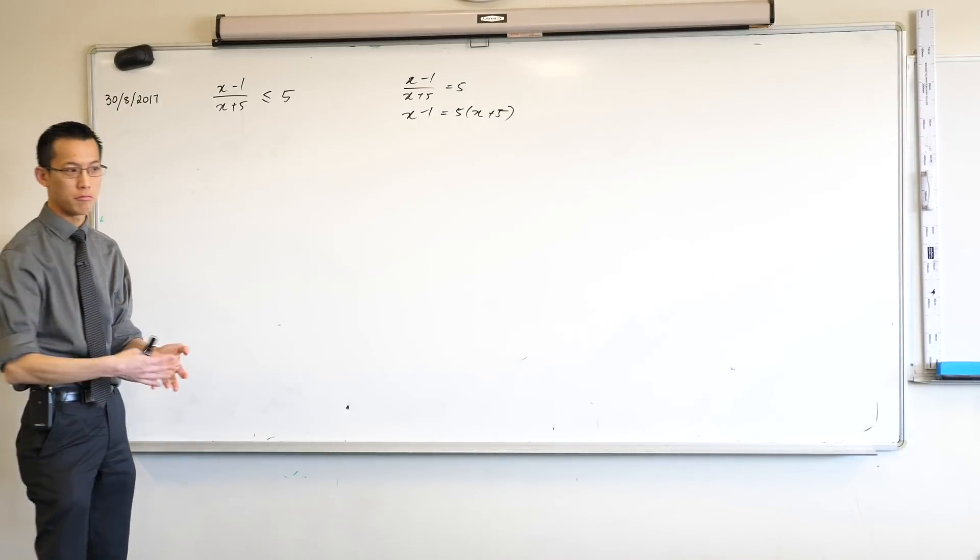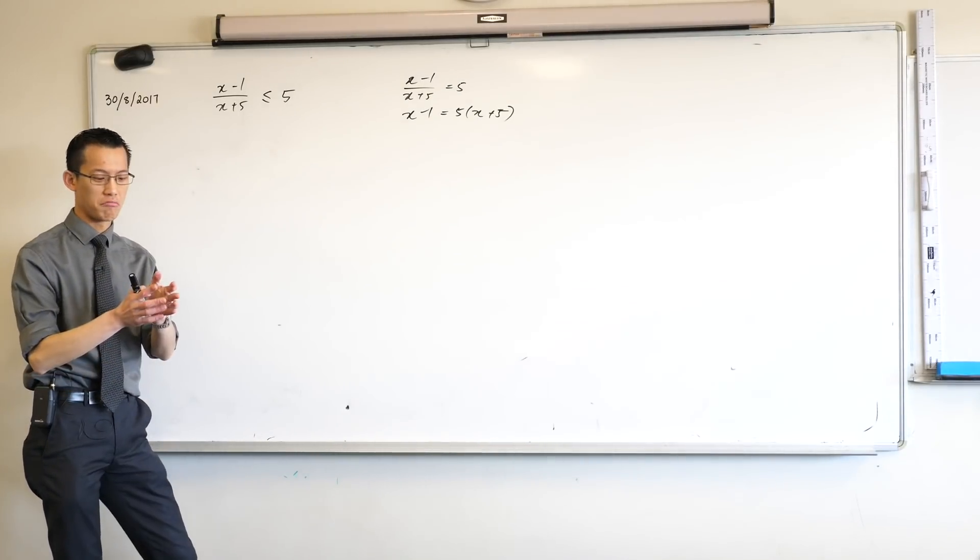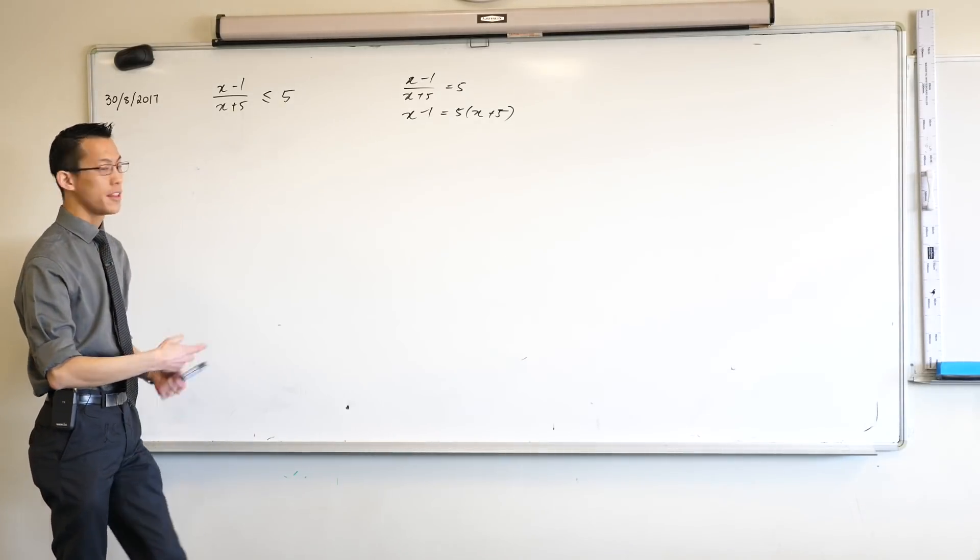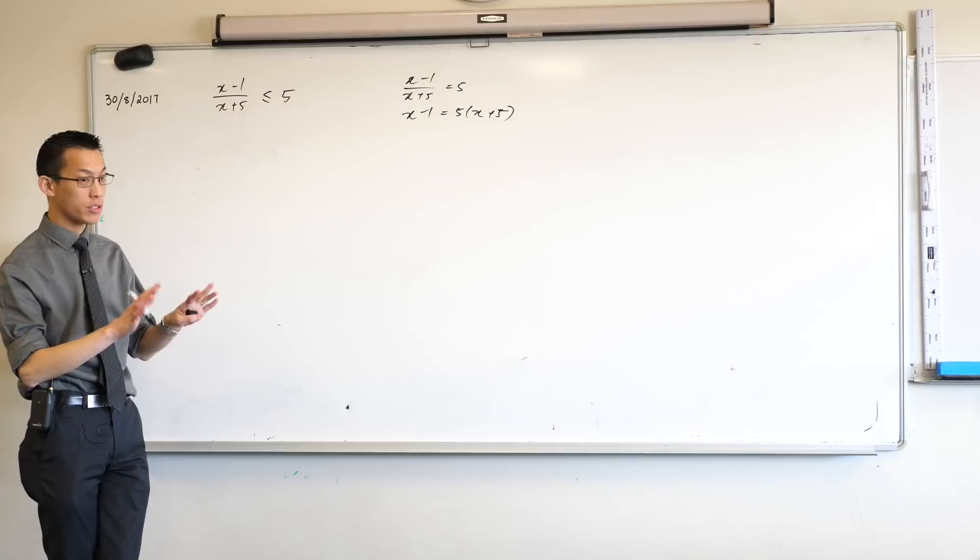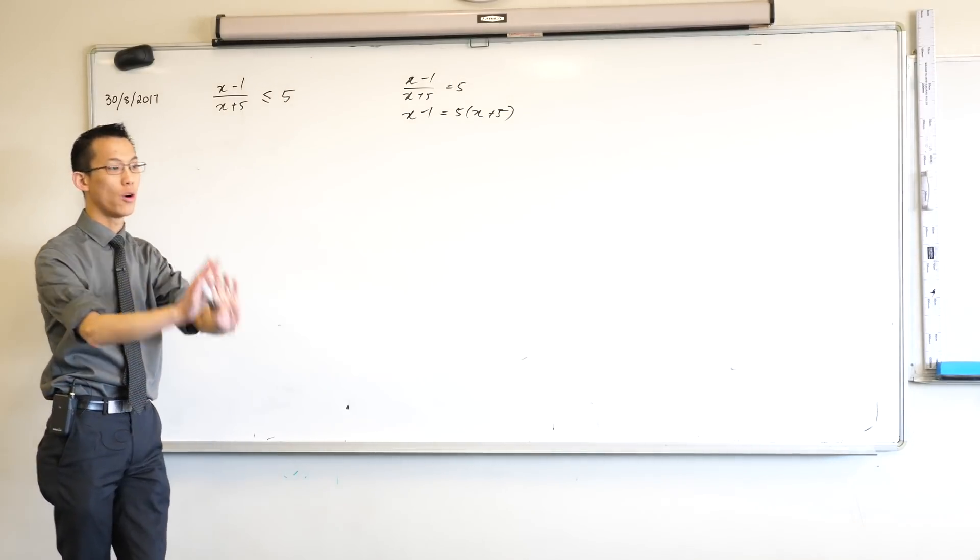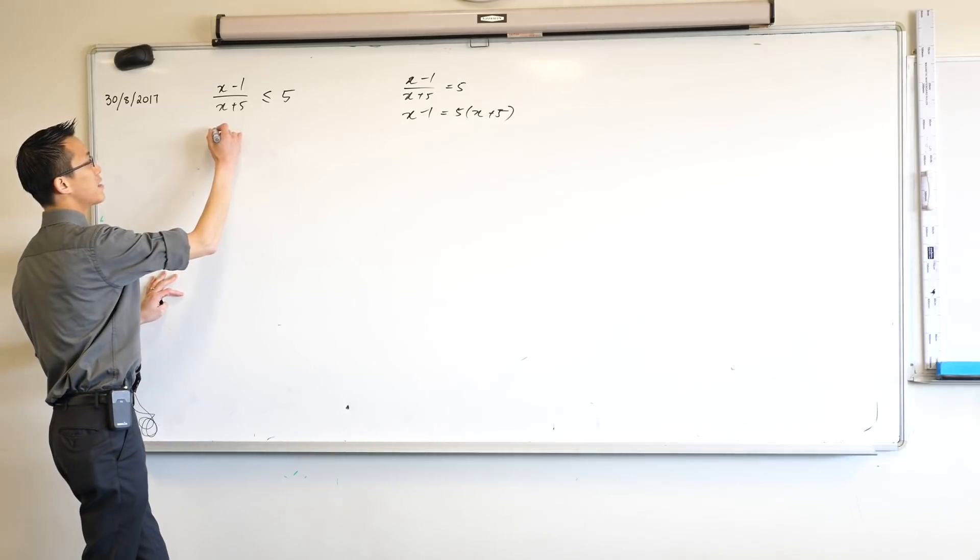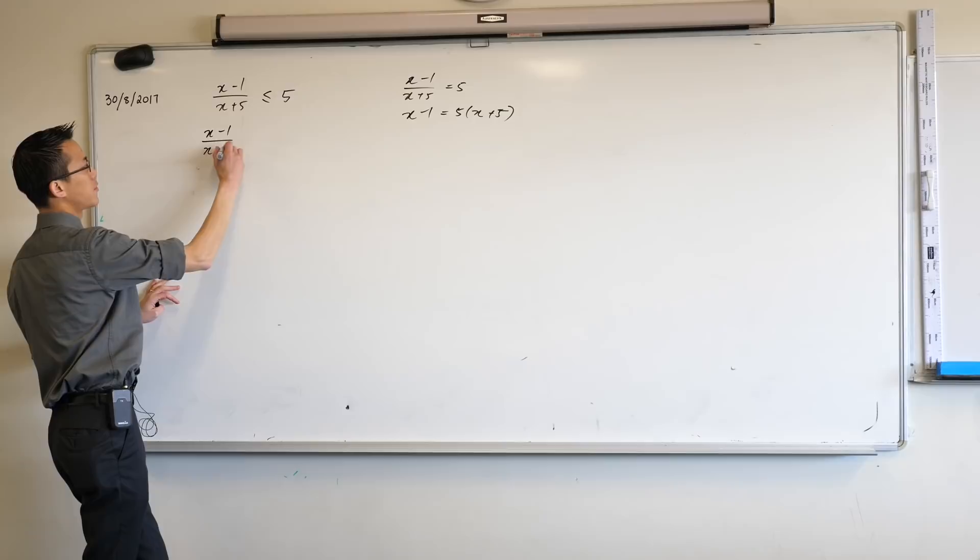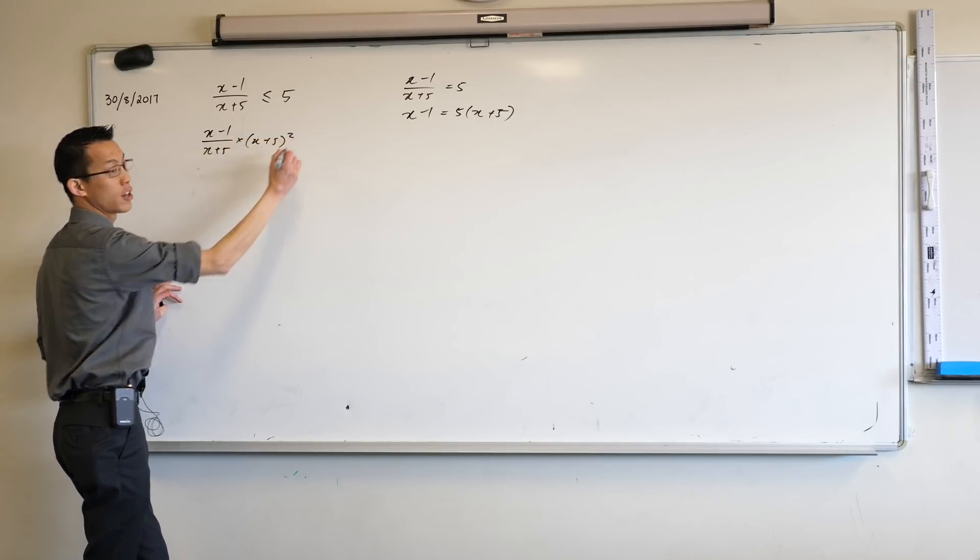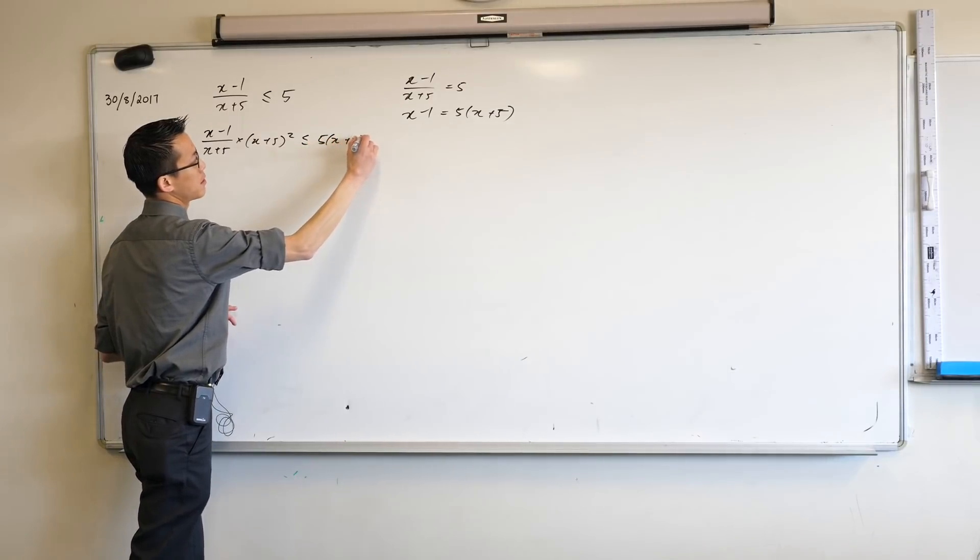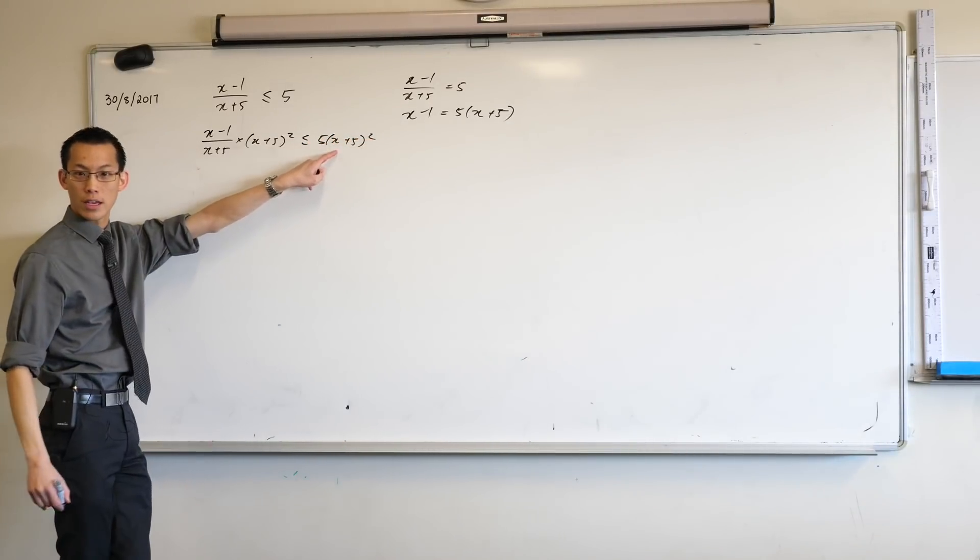So there's a couple of ways to overcome that. The first thing is you can work out cases, but that's gross and I avoid it wherever I can. The other alternative, which is reasonably straightforward, is you multiply by the square of x plus 5 because that's always positive, right? So I can say if I multiply x minus 1 over x plus 5 times the square of the denominator, what that does is it creates a quadratic over here.